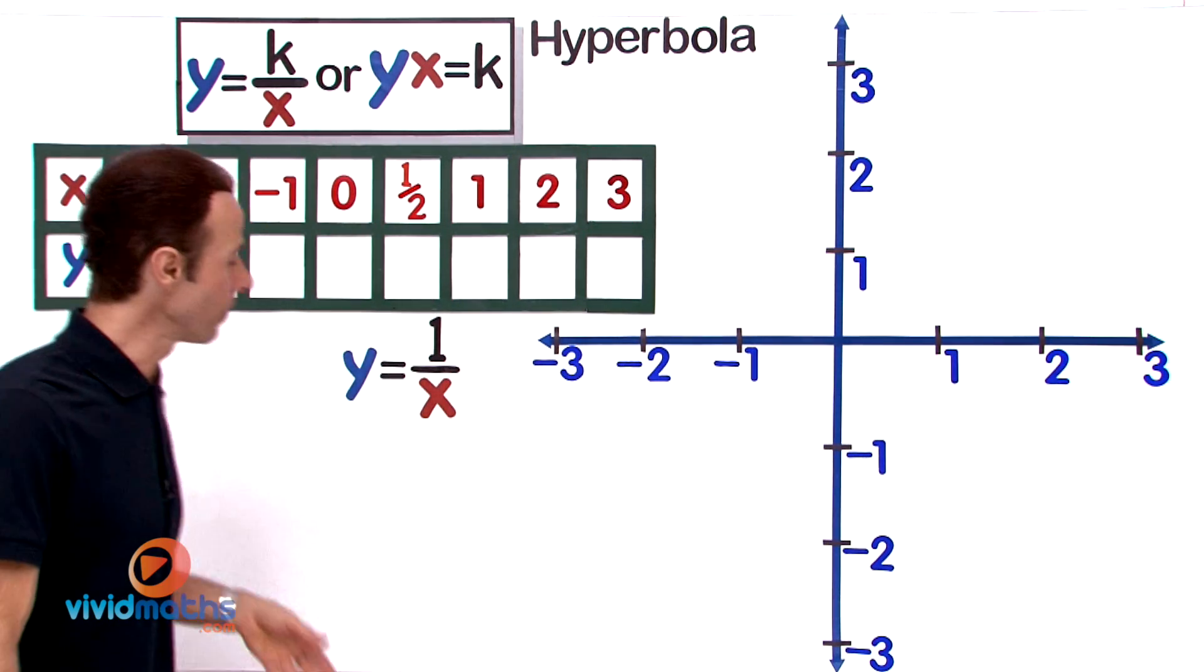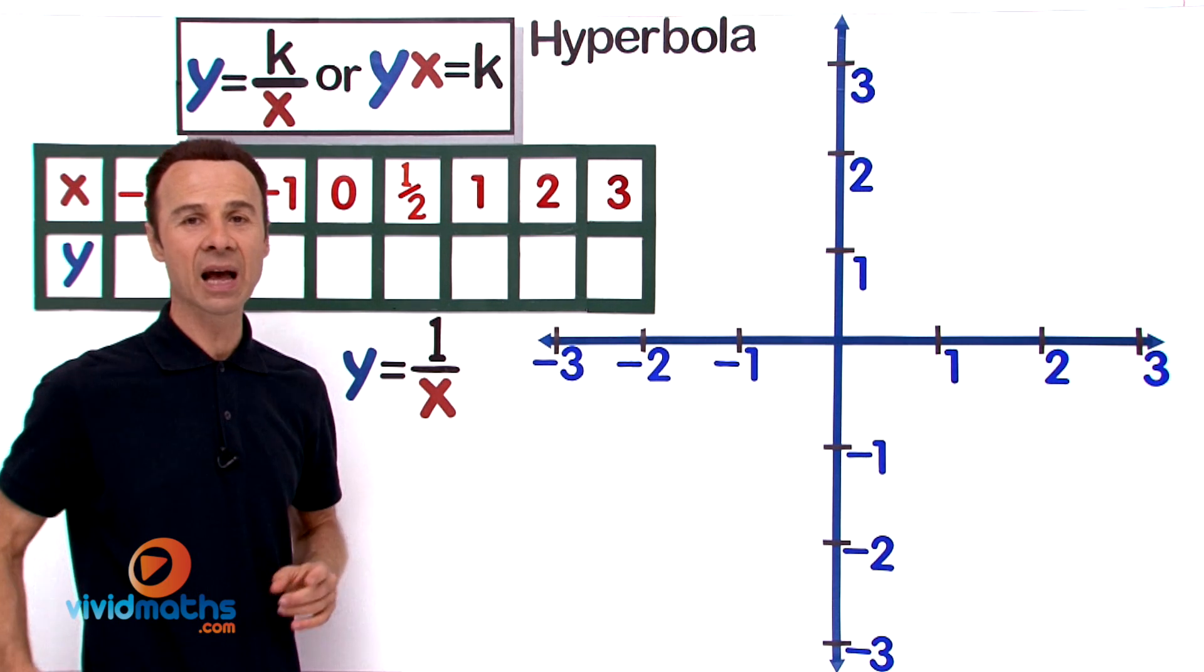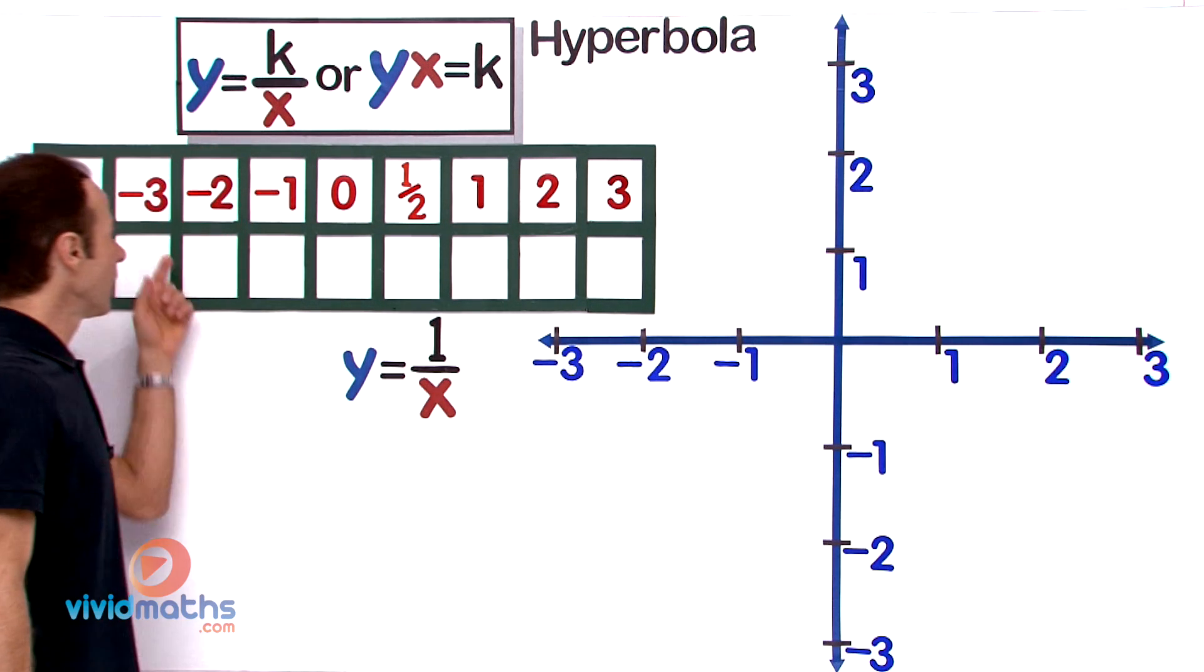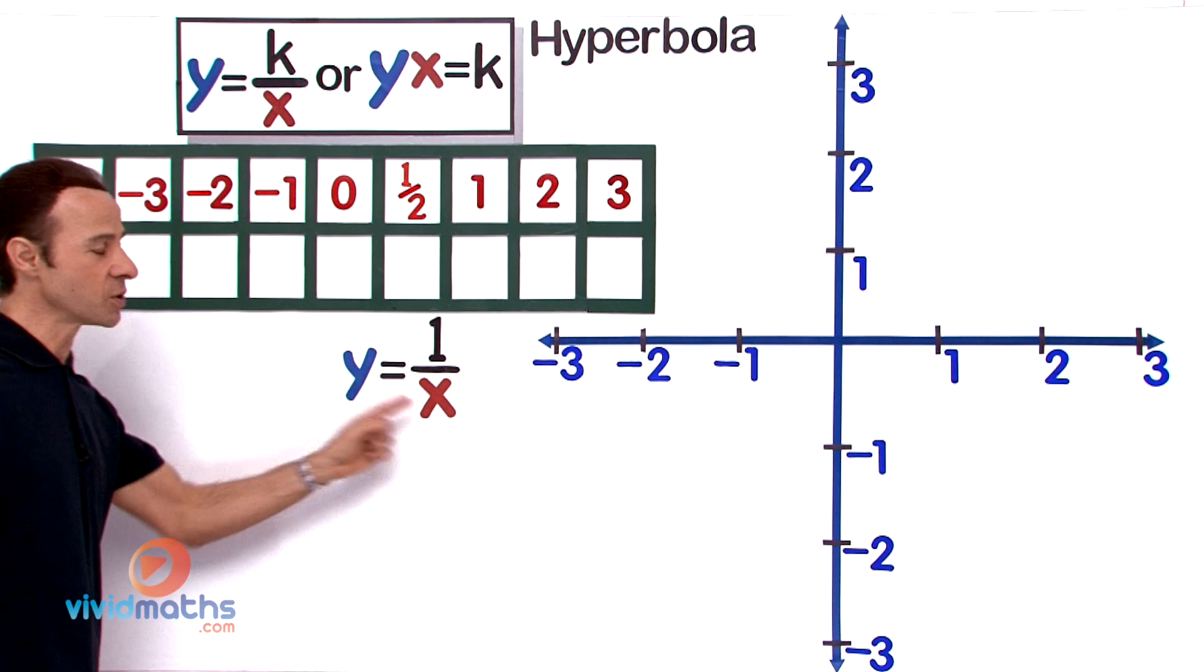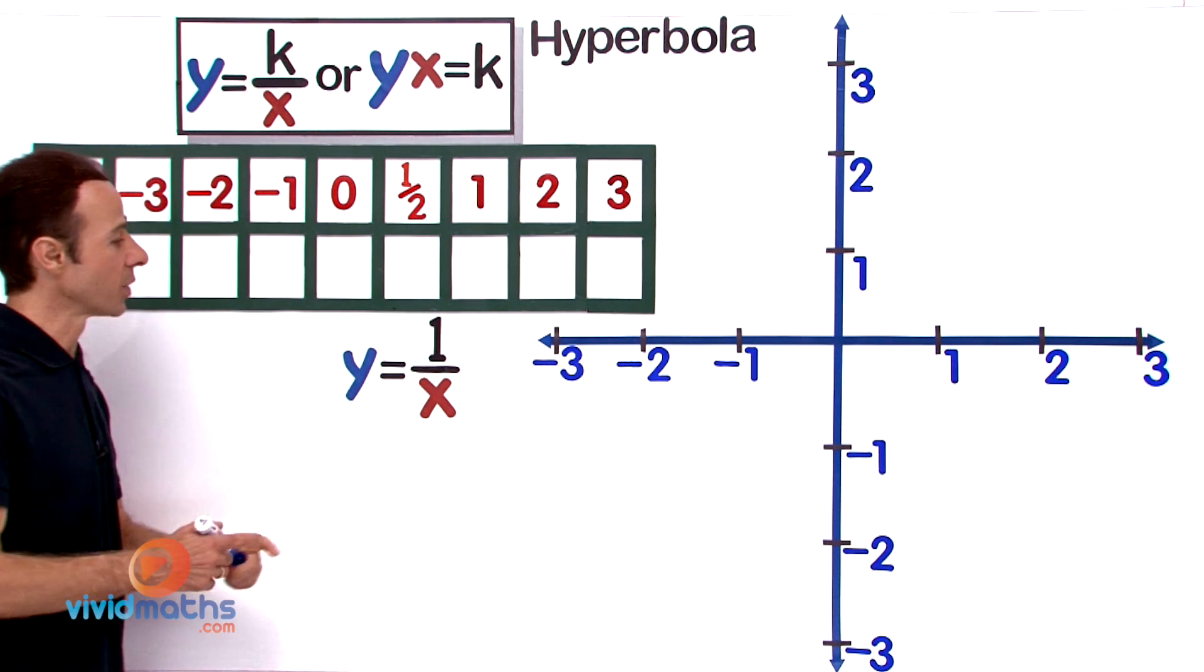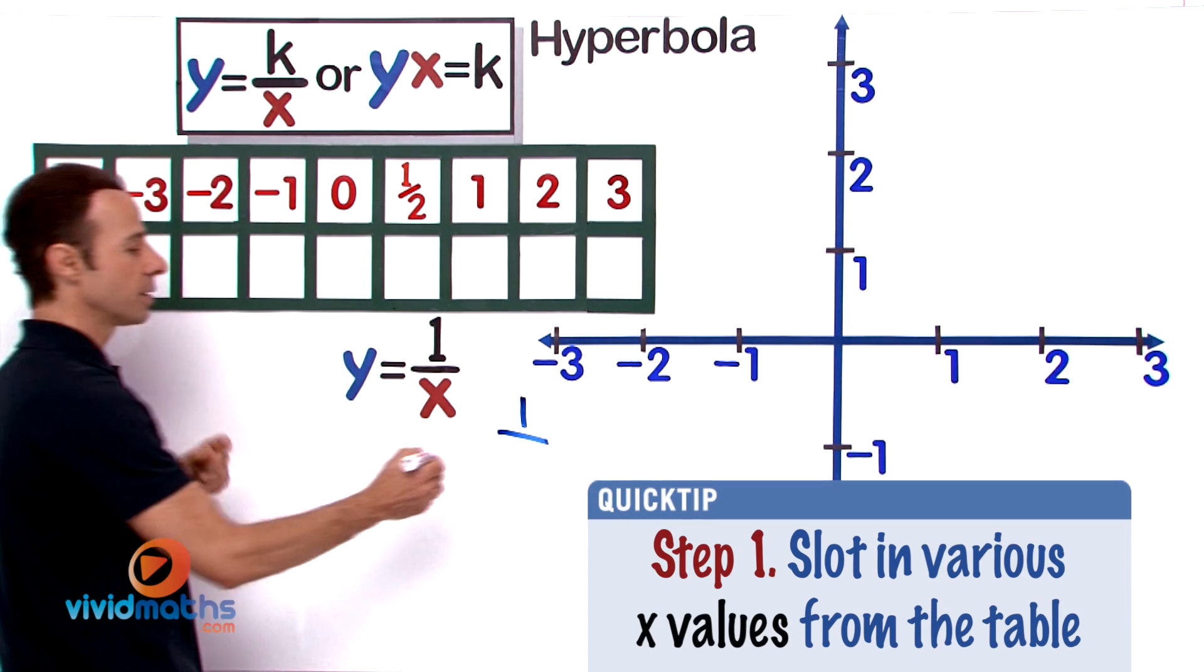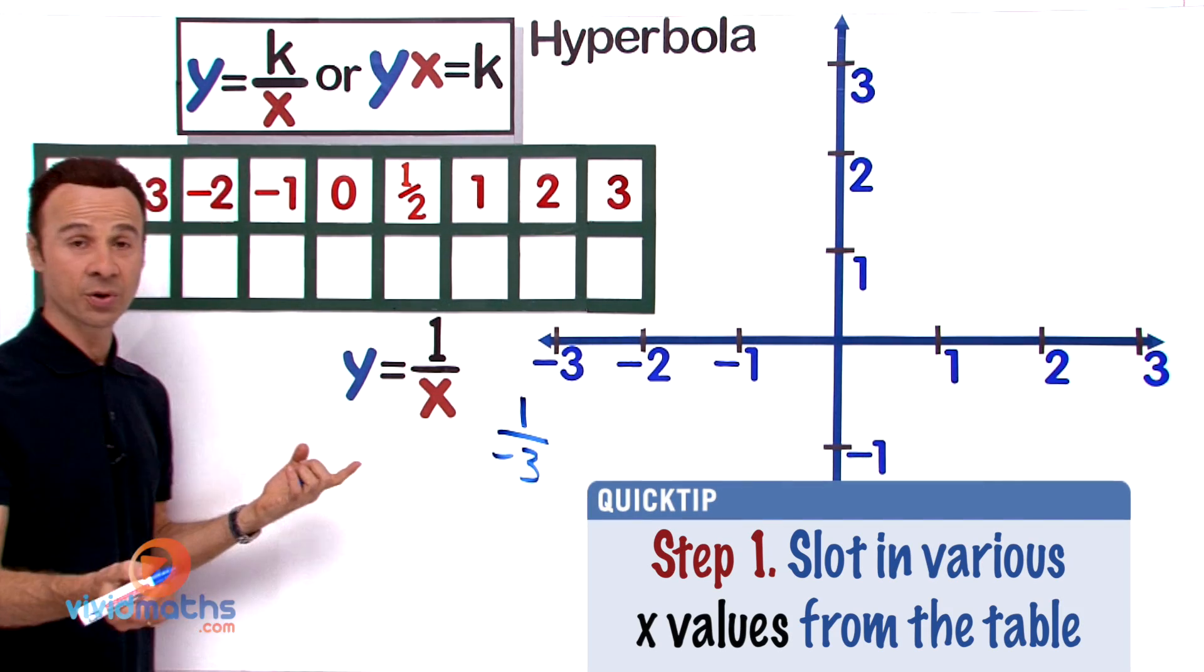Let's get started on this first one, y equals 1 over x. We're going to substitute numbers in there and see what we come up with. The first value is negative 3. We're going to substitute in there and find that y value. So for negative 3, well 1 over negative 3 is simply negative 1 third, so let's put that in: negative 1 third.